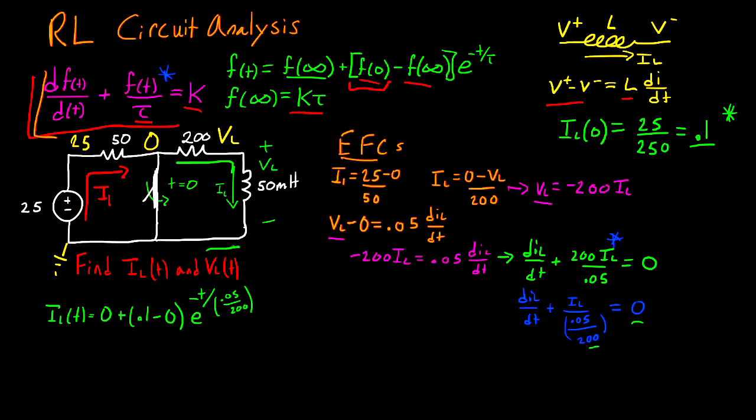But suppose we want to find what VL of T is. To do that, all I have to do is go back to my equations and rearrange VL to be in terms of IL. And I have that equation right here. So VL of T is going to be equal to negative 200, multiplied by 0.1, times E to the negative T, divided by my tau, which is 0.05, divided by 200.